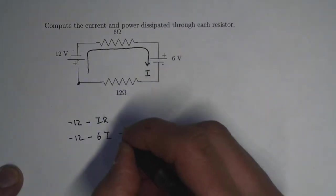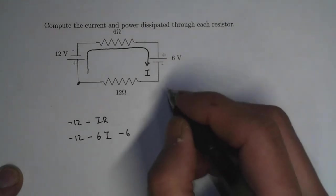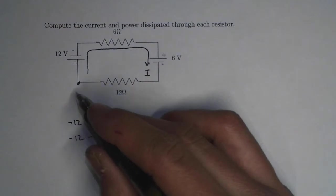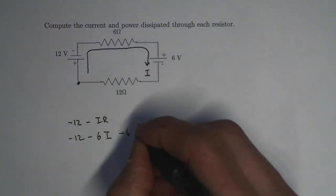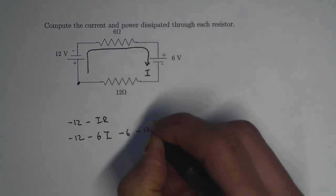Now we're going across this one again, this will get a minus 6. And then finally, we're going to cross this loop right here, which is minus 12I.